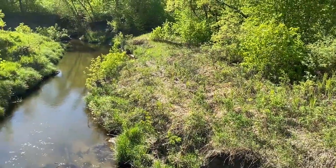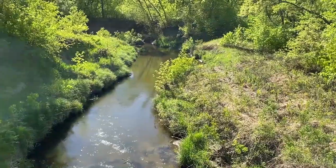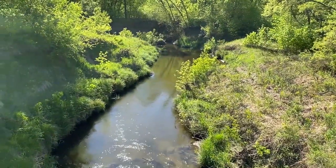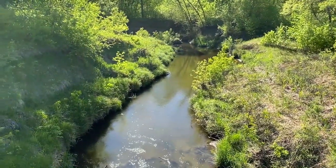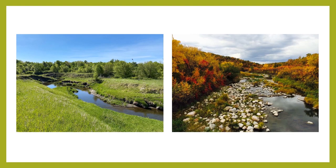The three main river systems in North Dakota are the Missouri River, Red River, and Mouse River, also known as the Souris River. Other rivers found throughout the state are tributaries of the Missouri River and the Red River. A riparian area, or riparian zone, is the area of vegetation that borders a stream or river.